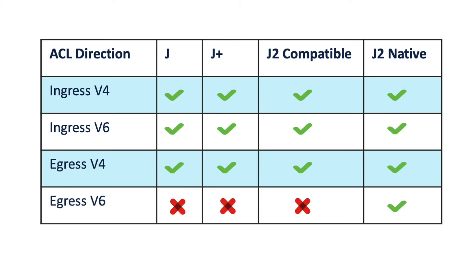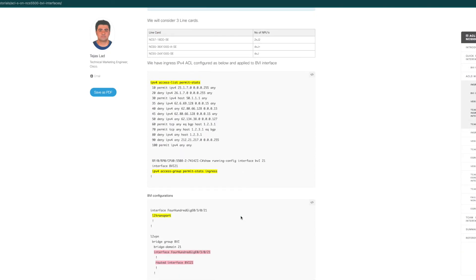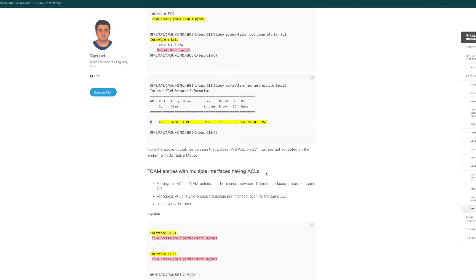To summarize the support for ACL on the BVI interfaces: we support v4 and v6 ACLs in the ingress direction on all the platforms. V4 ACLs are supported in the egress direction on all the platforms but with the help of the hardware module profile. V6 ACLs are supported in the egress direction only with the J2 native mode. For further deep dive on the feature support, I would highly recommend visiting our XR docs article, in which we have covered the ingress and egress ACL support on the BVI interface in detail. We have also captured the TCAM resource utilization when using the ACLs on the BVI interfaces both in egress as well as ingress direction. I will be posting the link of the document in the description section. Hope this video was helpful. Thank you for watching and see you in the next one.